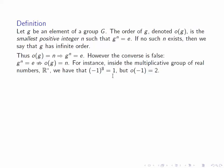Note that if the order of g is n, then g to the n is equal to the identity, but the converse is false. That if g to the n equals the identity does not imply the order of g is n. For instance, inside the multiplicative group of the reals, minus 1 to the power 8 is equal to 1, but the order of minus 1 is 2.